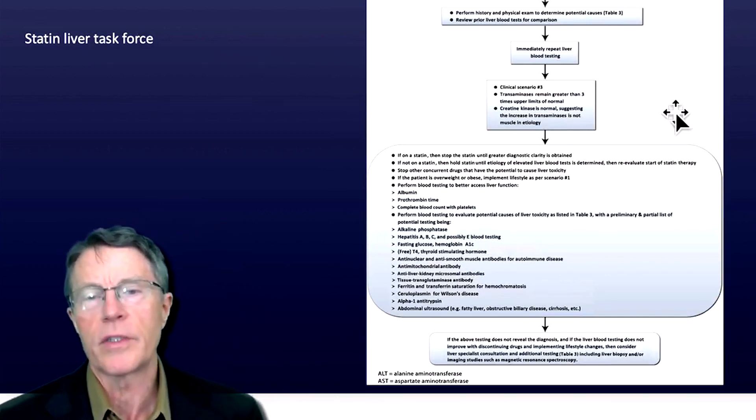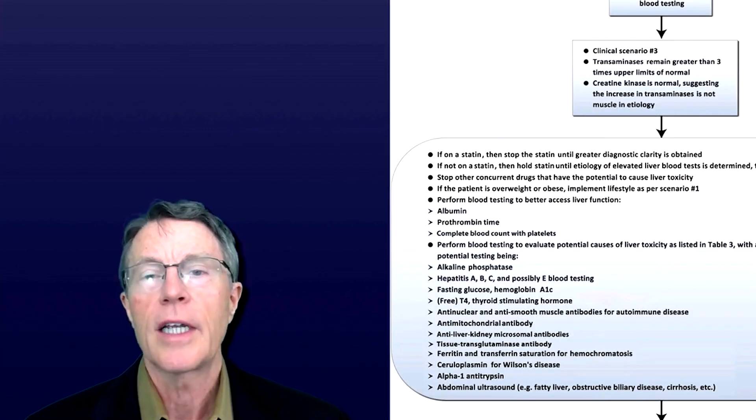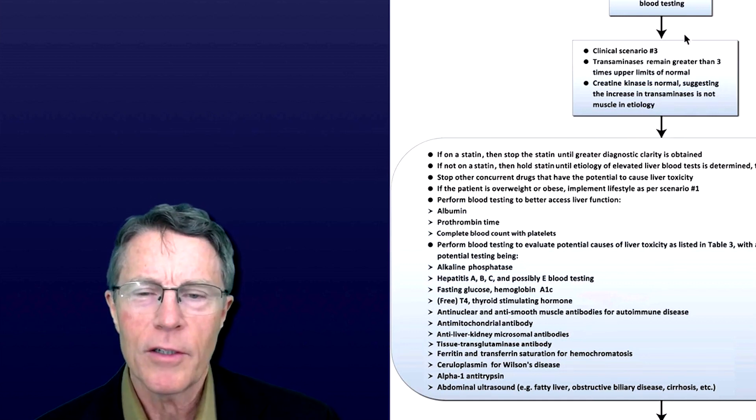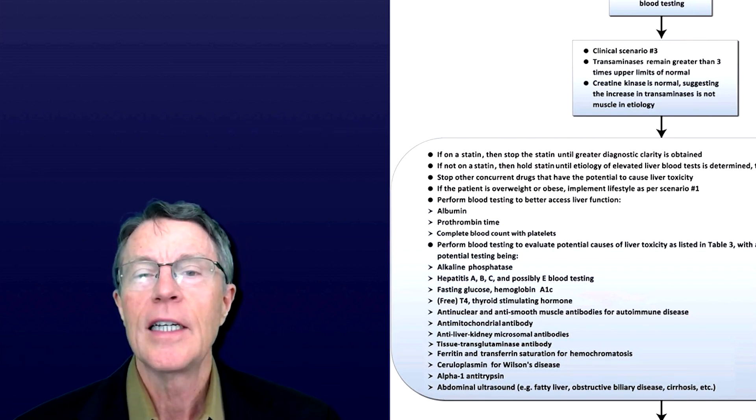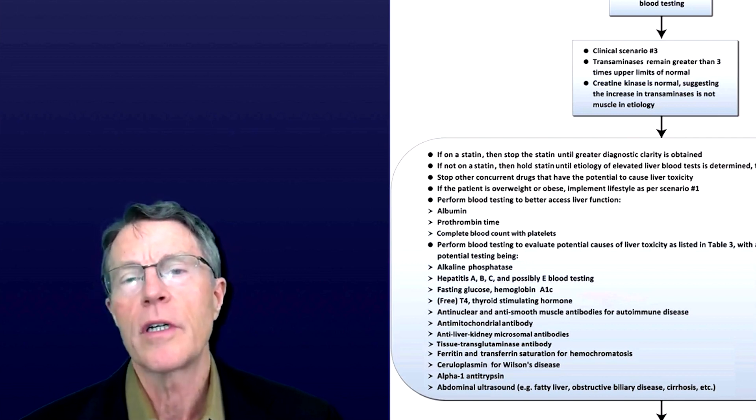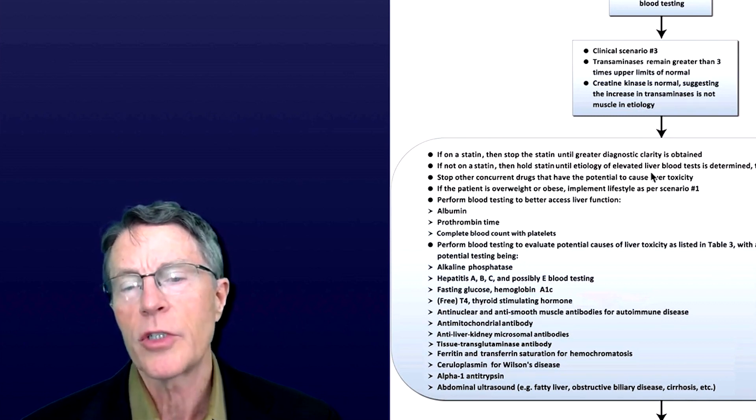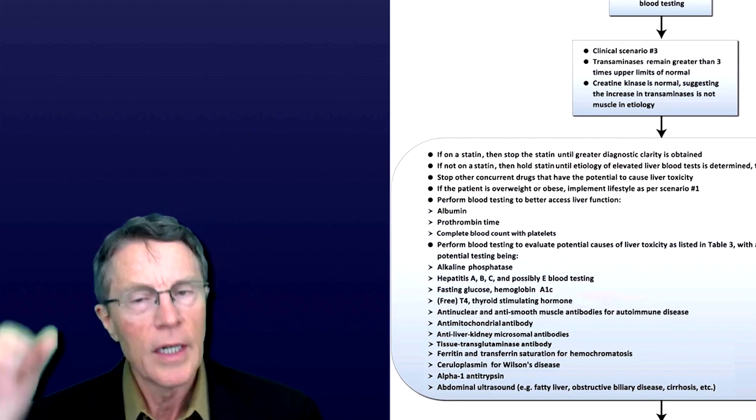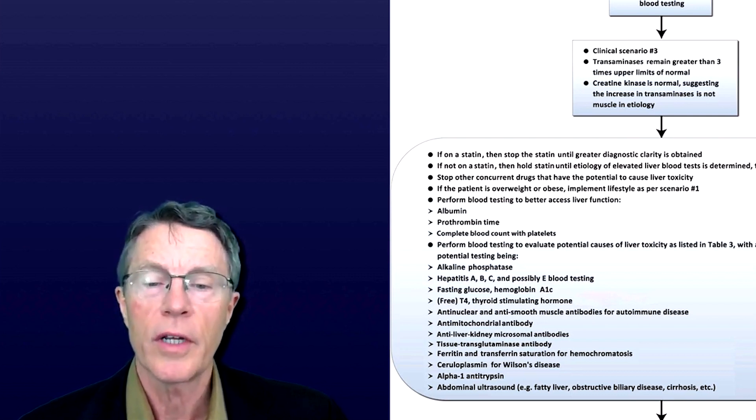How about if it's over three times the upper limit? That's actually a very good question and that's the next component of the liver task force. So again, I will always struggle with my images. They continue to get better, but sorry that this is not exactly on page. This is ALT or AST greater than three times the upper limits. Do a history and physical. Check prior liver function tests. Look at CK, creatinine kinase. If it's normal, suggesting the increase in transaminase is not in muscle etiology.